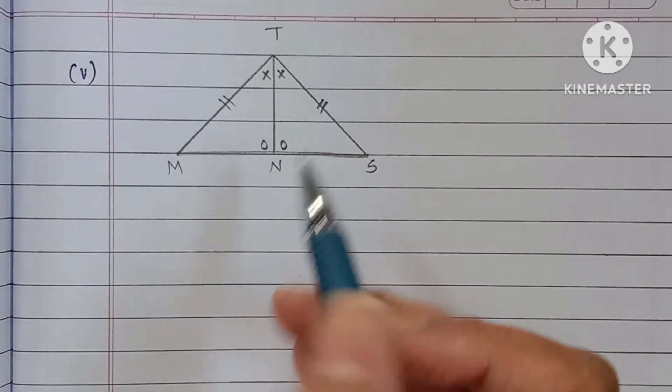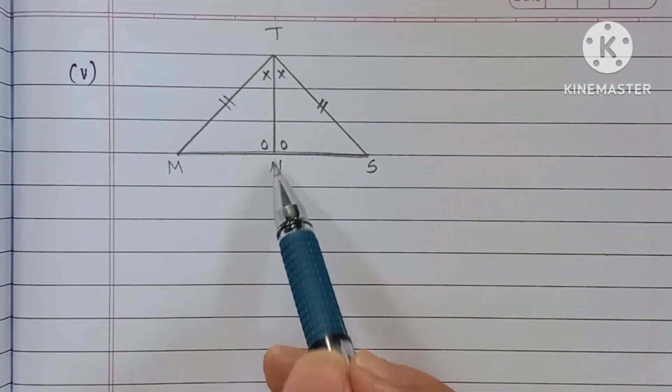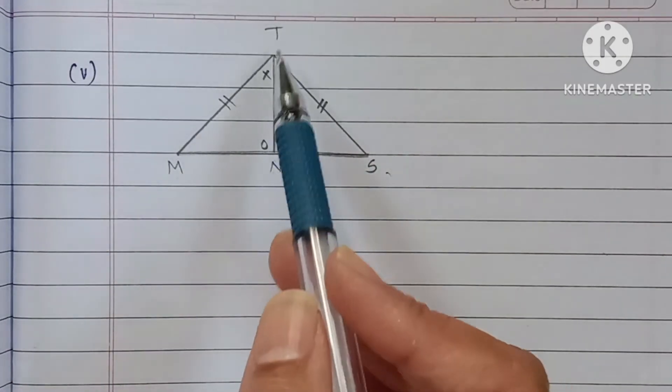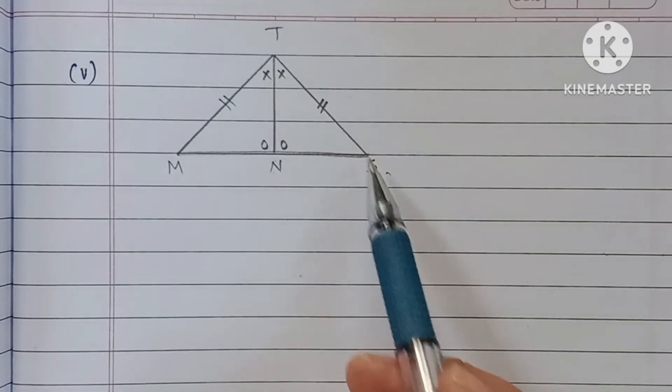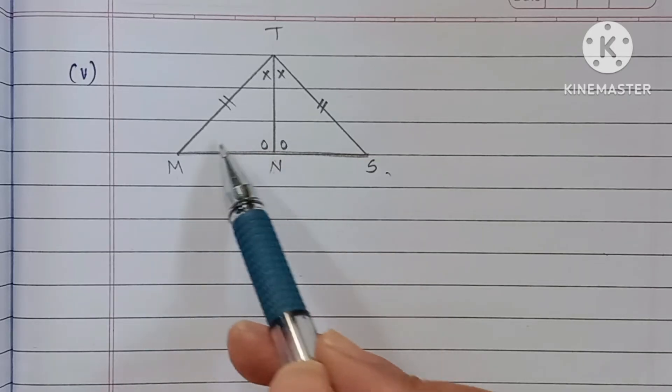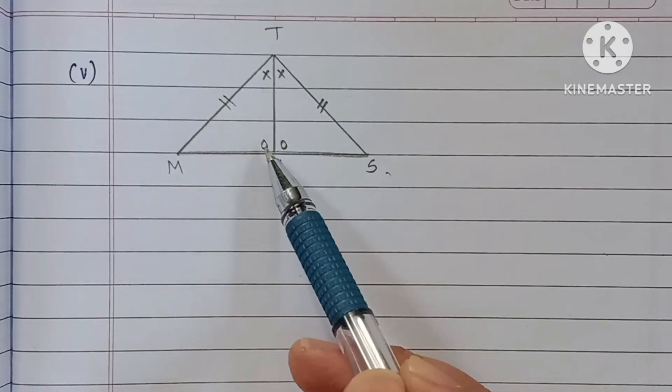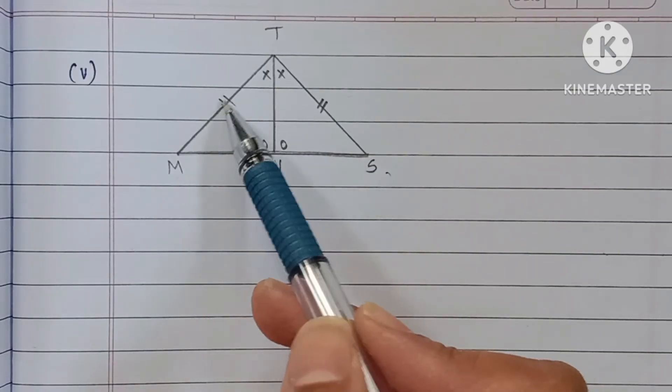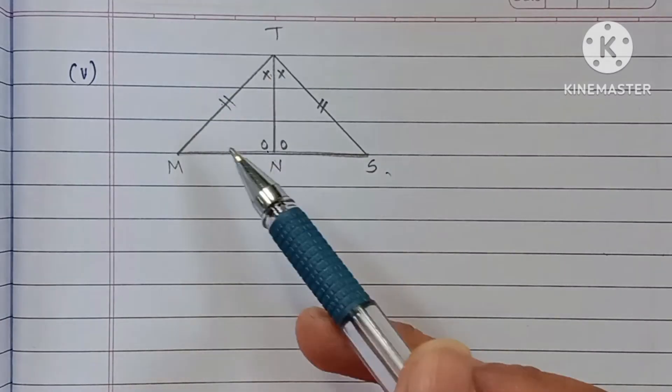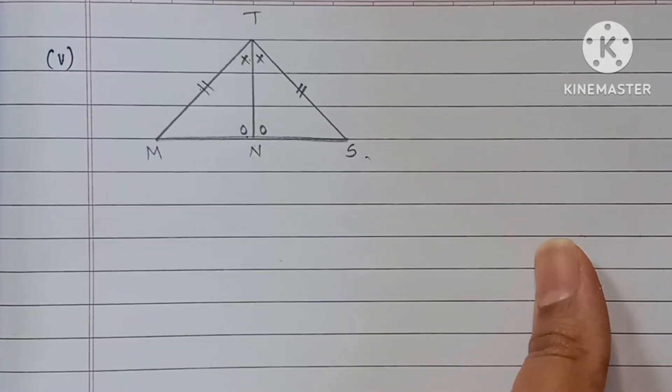Fifth question. Triangle TNM and TNS. These two triangles are here. For side TM and TS, sides are congruent. These two angles are congruent, and these two angles are congruent. Means these two triangles are congruent. Angle-angle-side, or angle-side-angle.